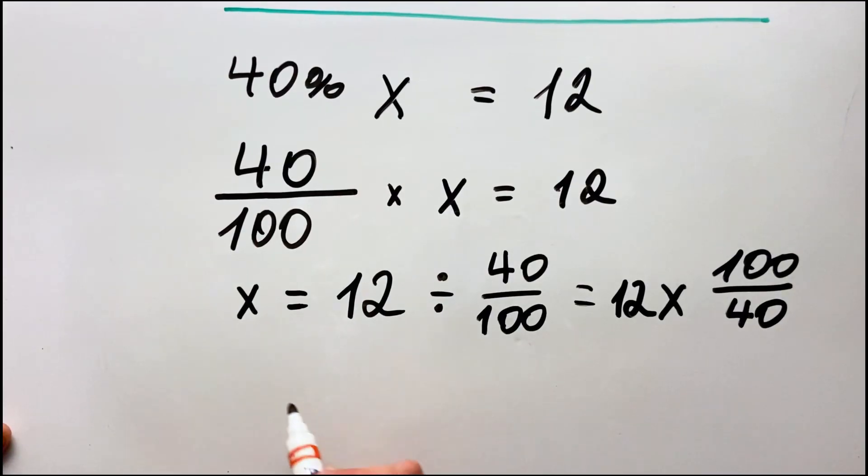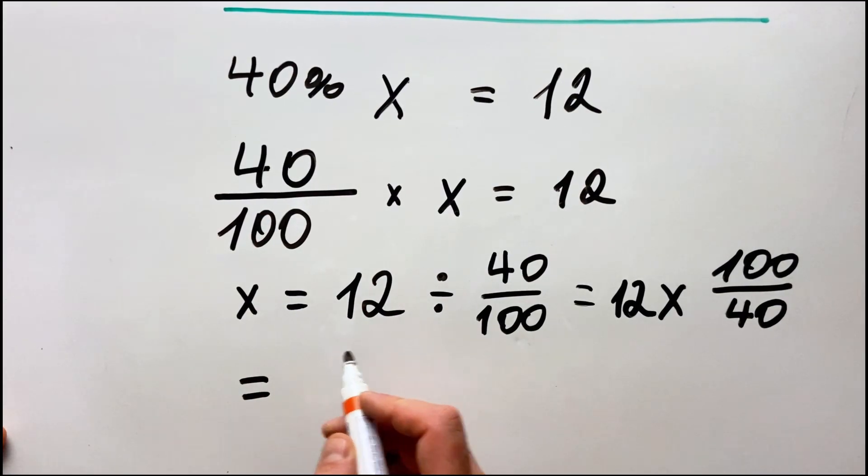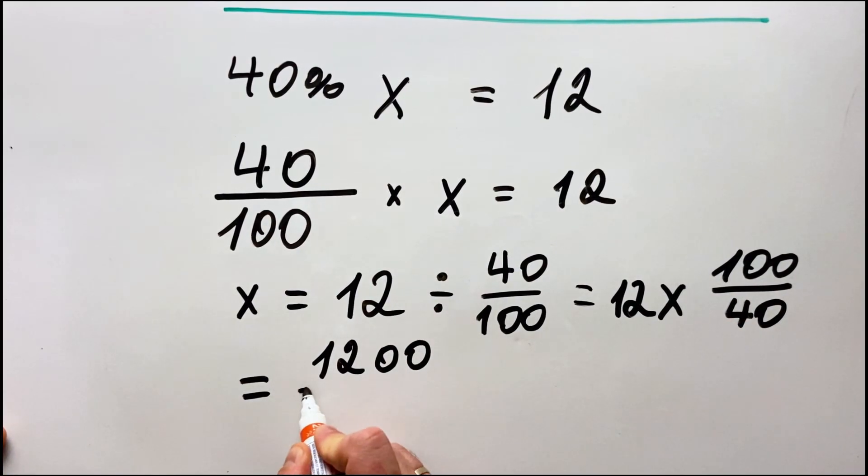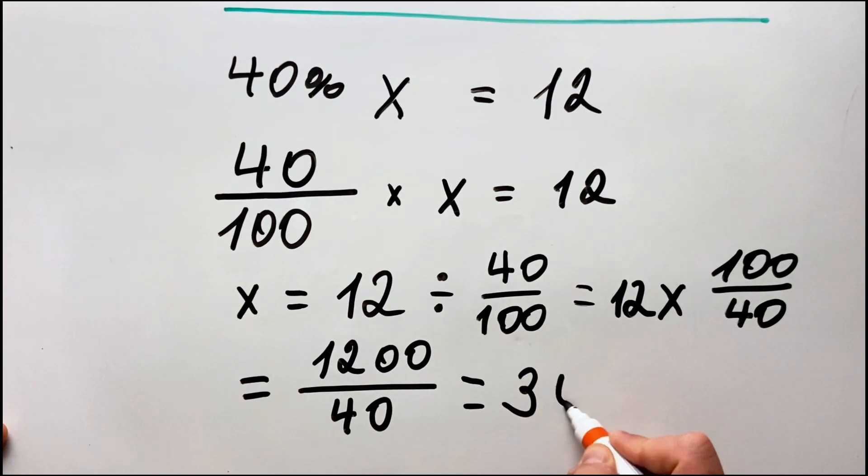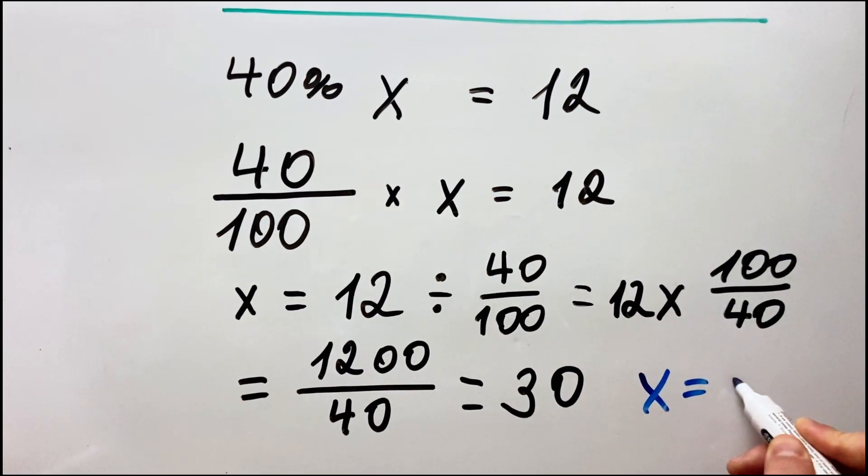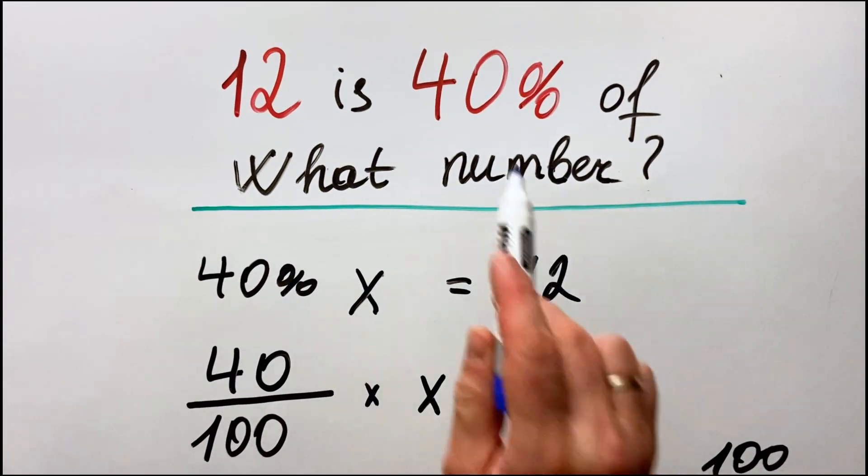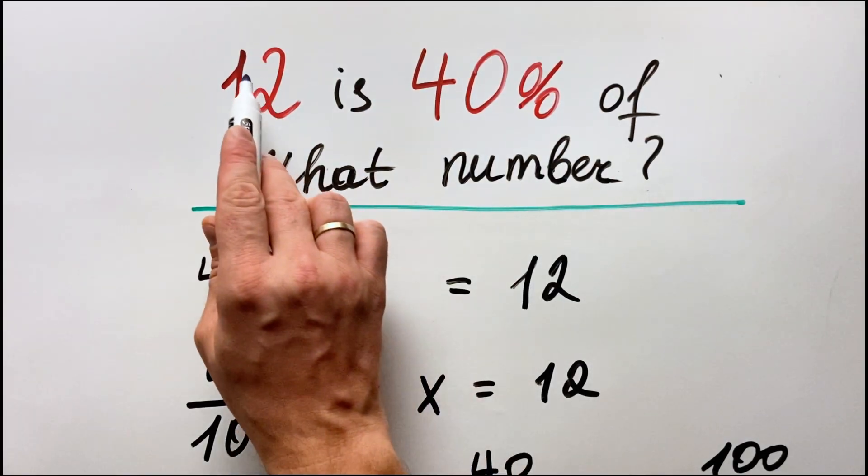And that equals to 12 multiplied by 100 is 1200 divided by 40. We can divide by 40 because this is divisible and then the number is 30. X equals to 30, meaning that 40 percent of 30 is 12.